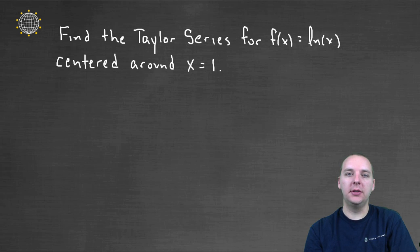For this example we're going to try to find the Taylor series for the natural log function centered around x equals one. Now notice I didn't call it a Maclaurin series this time because it wasn't centered at zero, it was centered at one.